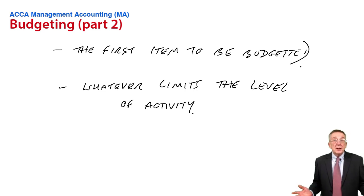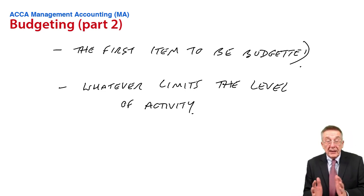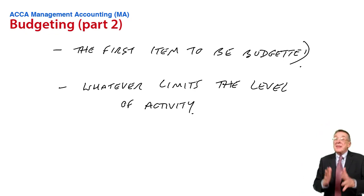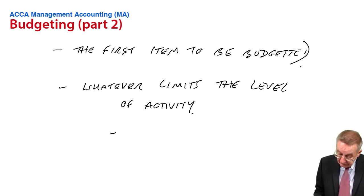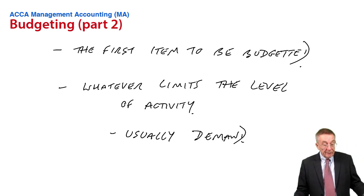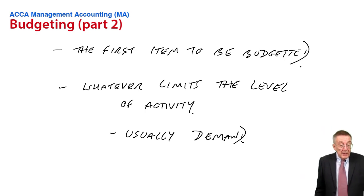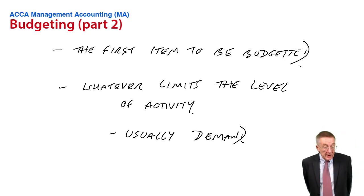But occasionally, it could be things like wood, the material. If the material availability is limited, that is what's stopping us producing more, selling more and being bigger. So that's what we mean by principal budget factor. It's usually the demand, our sales. Alright, now let's prepare a budget, or prepare bits of a budget.